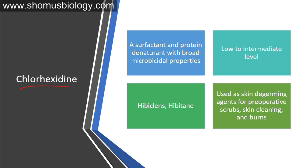Chlorhexidine is a surfactant and protein denaturant with broad microcidal properties and low to intermediate level of action. An example is Hibiclens, used as a skin de-germing agent for pre-operative scrubs, skin cleaning, and burns. Before operations, the skin needs to be scrubbed, and that's where we use chlorhexidine.